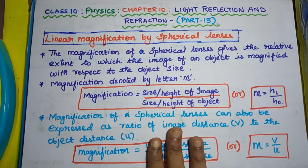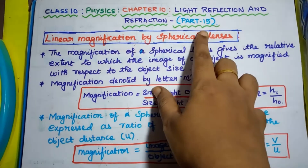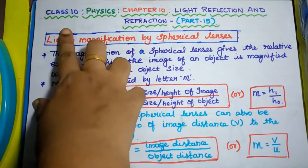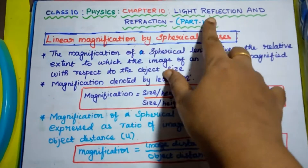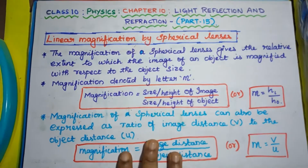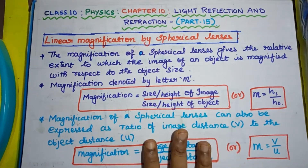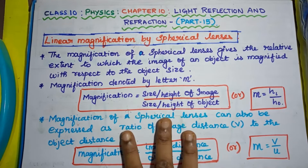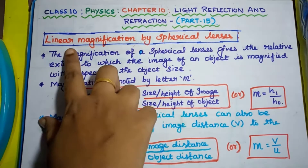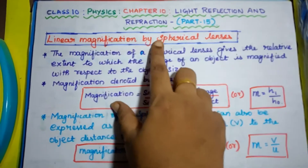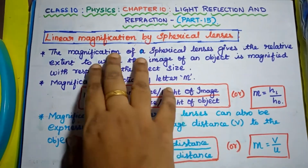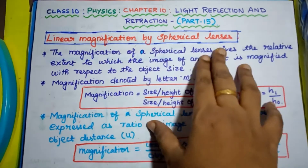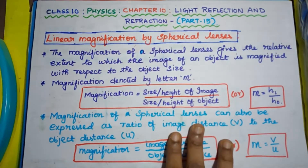Hello students, I hope you all are doing good. This is part 15 in the series from class 10 physics, chapter 10: light reflection and refraction. In this video, we are going to discuss about linear magnification by spherical lenses, or simply magnification by spherical lenses.